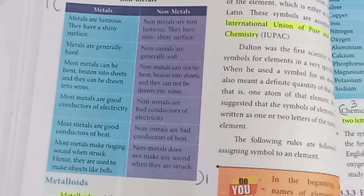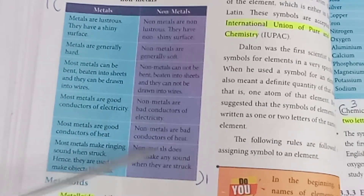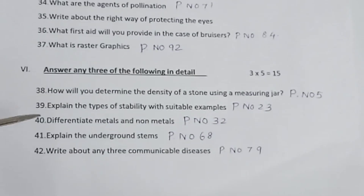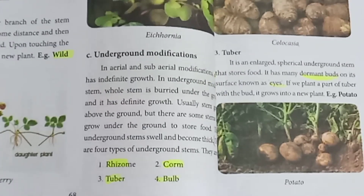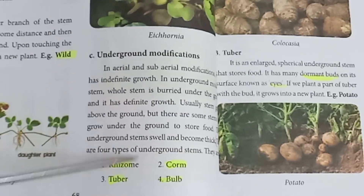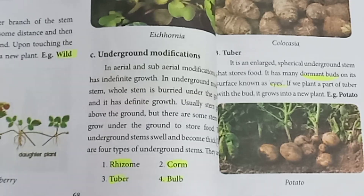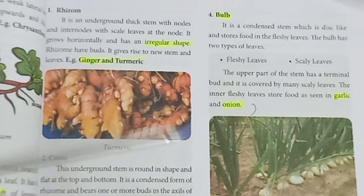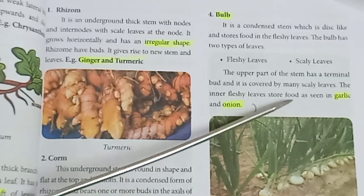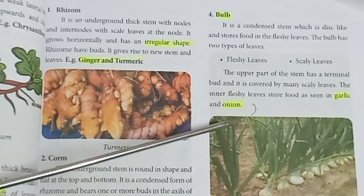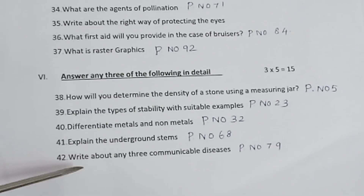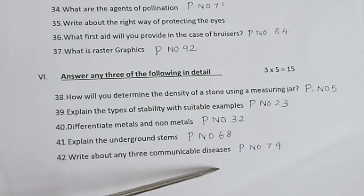Question 40 or 41: Differentiate metals and non-metals. Refer to page number 32. Question 41: Explain the underground stems. Refer to page number 68-69. There are four types of underground stems. Food is stored as seen in garlic and onion.